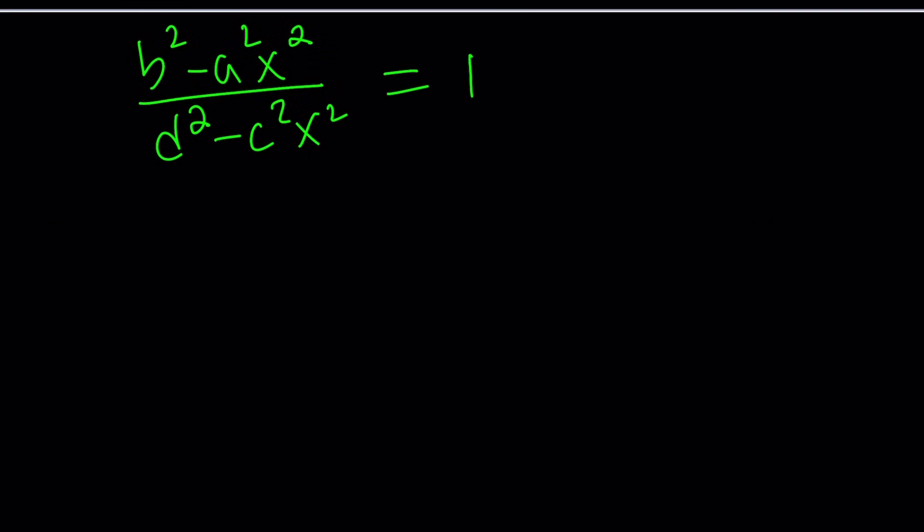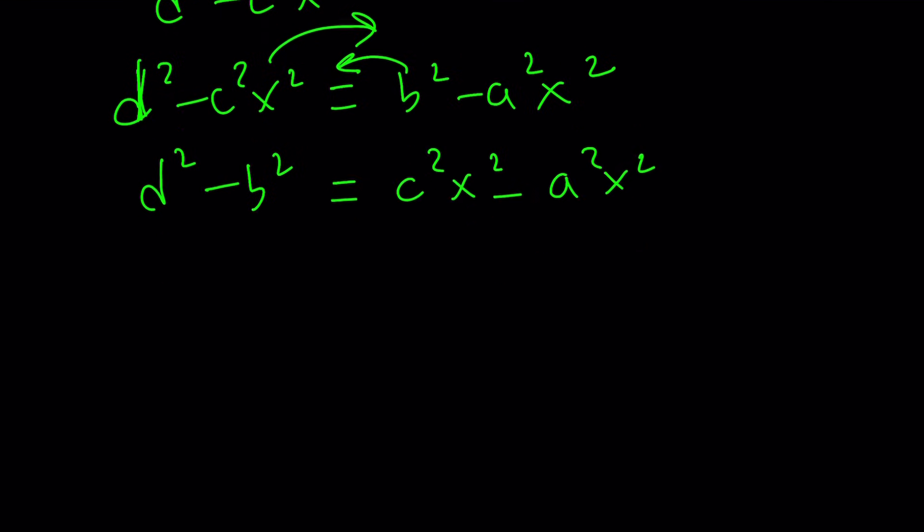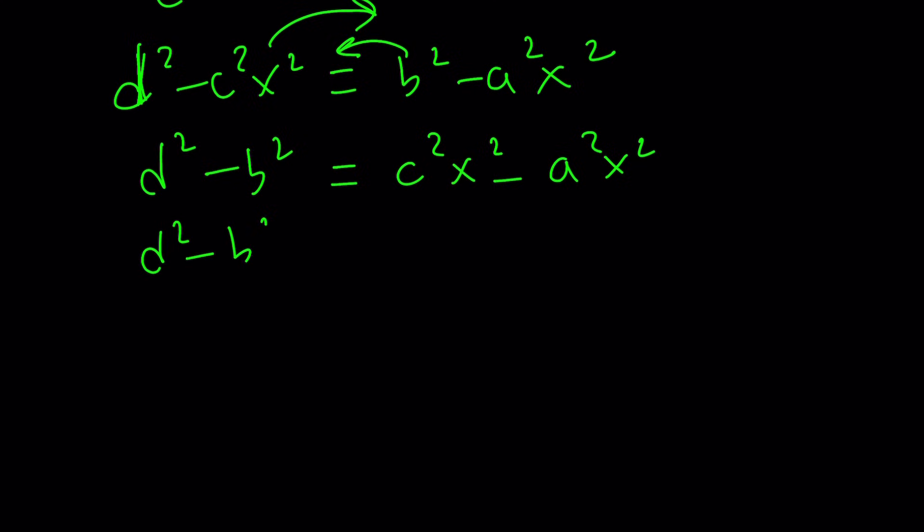Under those conditions, we can safely say that d squared minus c squared x squared is equal to b squared minus a squared x squared. What's that supposed to mean? You can interpret this in many different ways. You can bring the b squared over, put this on the right hand side, put this on the left. So it'll become like this. Then you can factor out x squared and write this as c squared minus a squared as the coefficient of x squared.